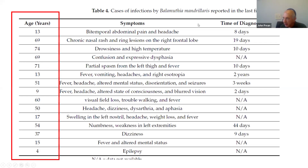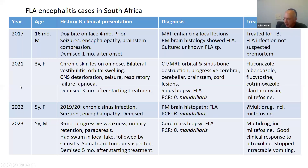For Balamuthia mandrillaris, looking at the last five years, patients are predominantly older individuals but not exclusively — there's also a four-year-old. There is a really wide range of presenting features and clinical findings, which only complicates recognition of the disease.